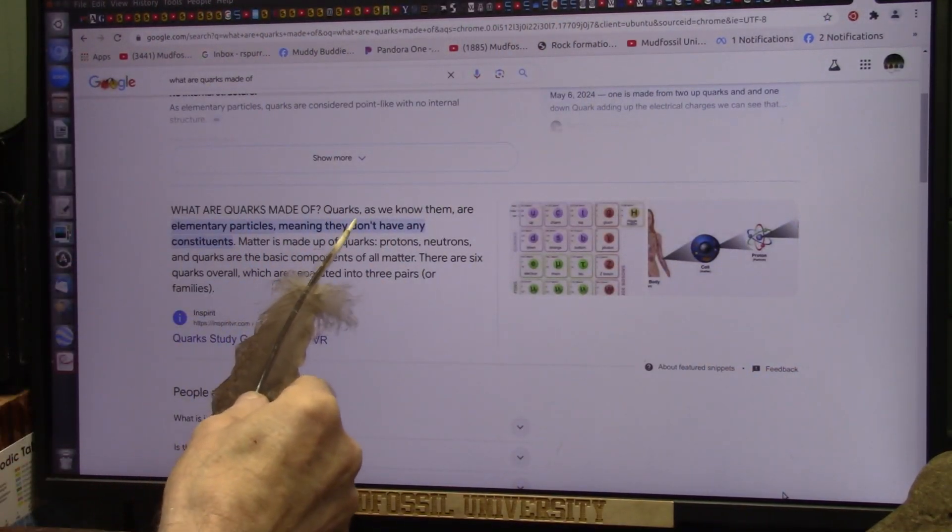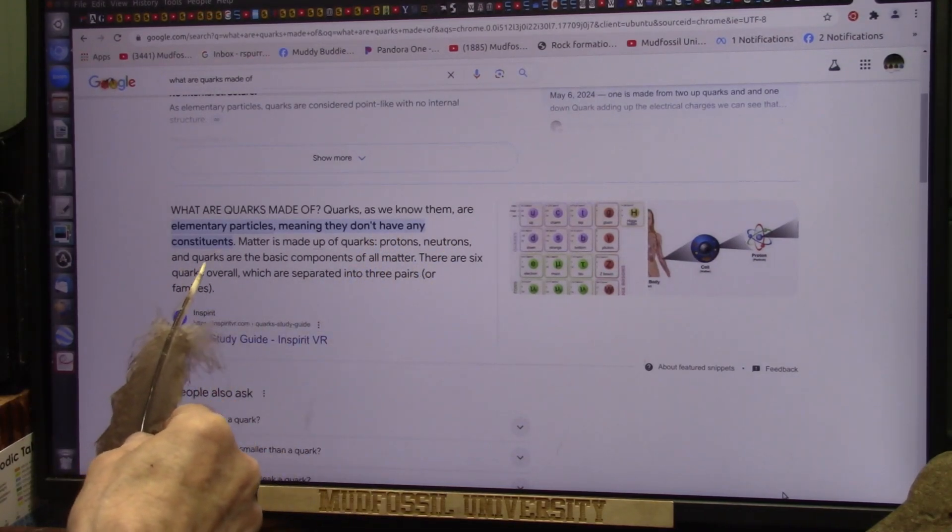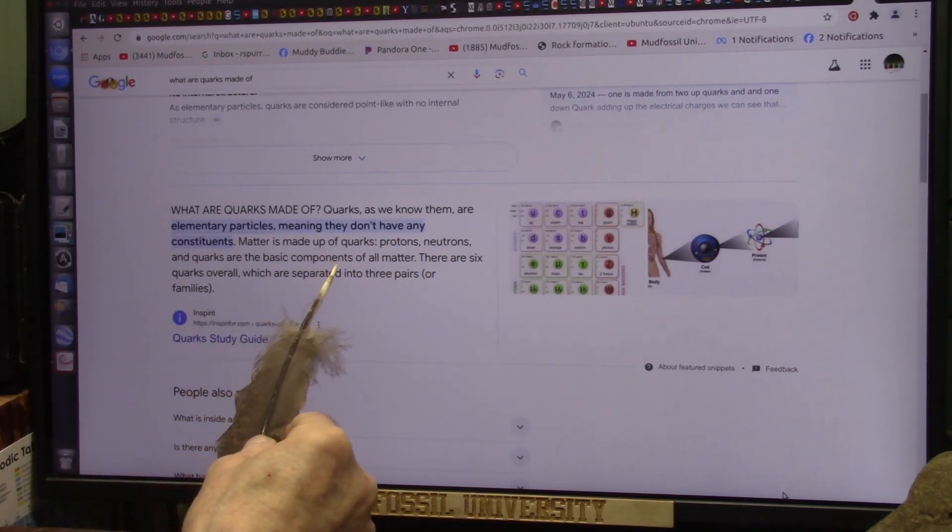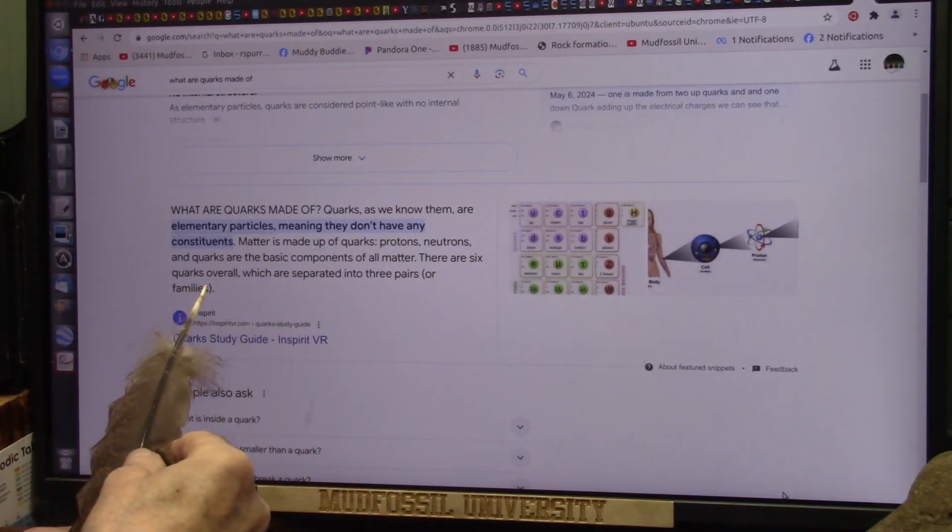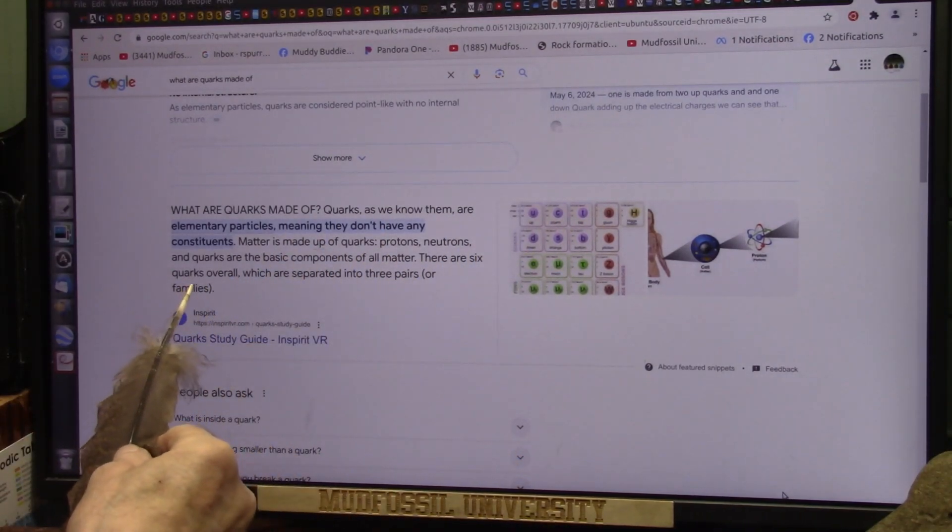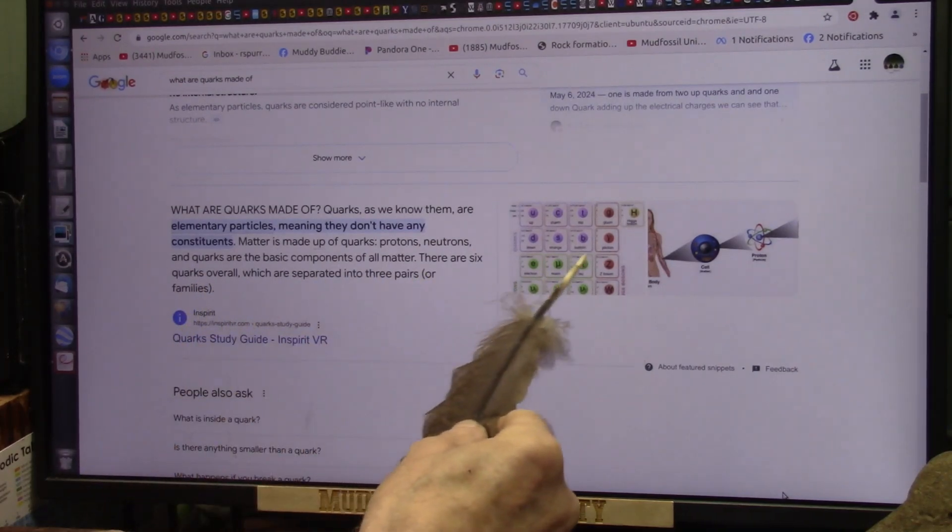And it says matter is made up of quarks, and then it has a colon here: protons, neutrons, and quarks are the basic components of all matter. There are six quarks overall, which are separated into three pairs. No, there aren't.